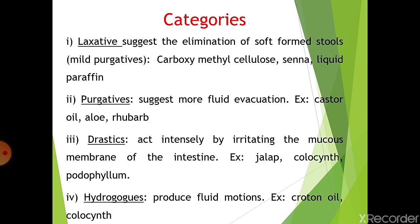The second class is purgatives, which suggest more fluid evacuation. Examples include castor oil, aloe, and rhubarb. The third category is drastics, which act by irritating the mucous membrane of the intestine. Examples include jalap, colocynth, and podophyllum. The fourth class is hydragogues, which produce fluid motions — examples include croton oil and colocynth. The mechanism of action of laxatives may be either bulk-forming, irritating, or emollient, depending upon the chemical nature of the active constituent.